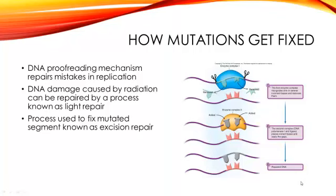Can these mutations be repaired? The short answer is yes, but the long answer is that they are not always caught and repaired. There are two repair mechanisms: one occurs during DNA replication, and the other catches mutations caused by mutagens. Regardless of how the error is caught, the repair is made through a process known as excision repair. In this process, the error is identified, then removed by an enzyme, and then polymerase replaces the bases with correct bases, repairing the error entirely.